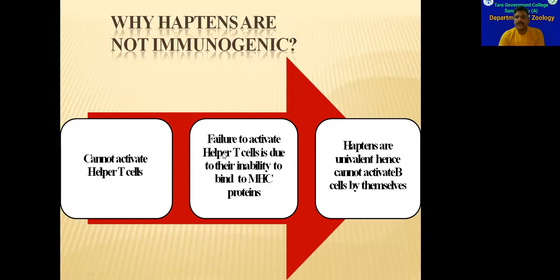However, if you fail to activate the T Helper Cell, you can use the MHC protein to activate the T lymphocyte. MHC is a major histocompatibility protein, and MHC is a key part of this process.